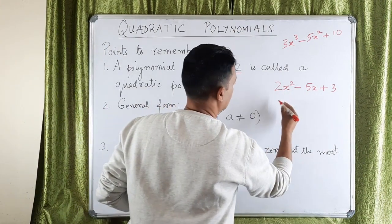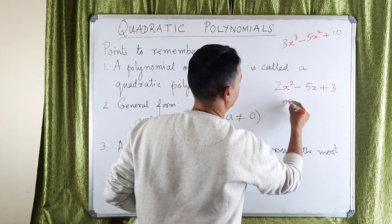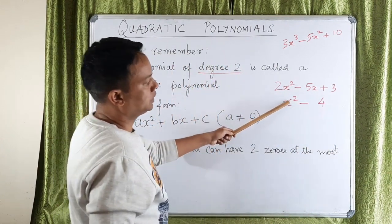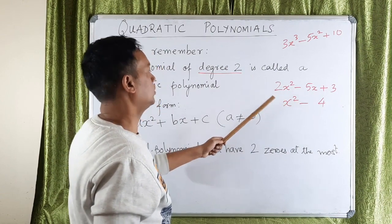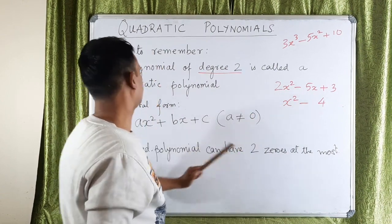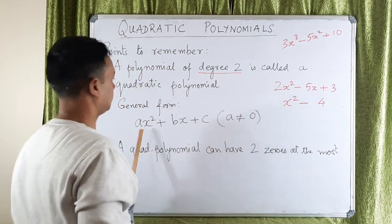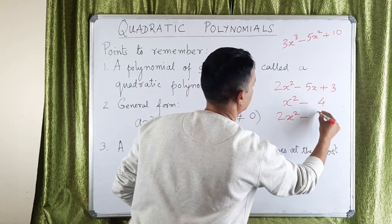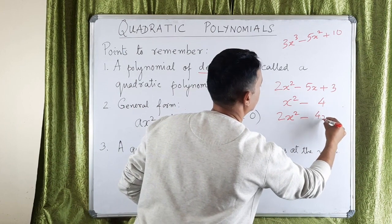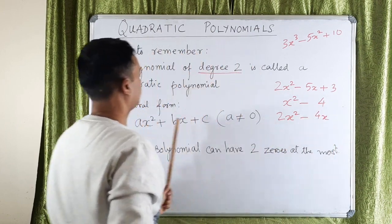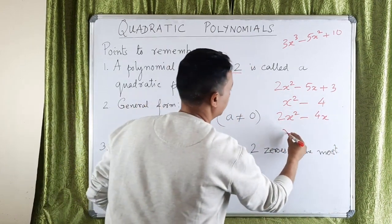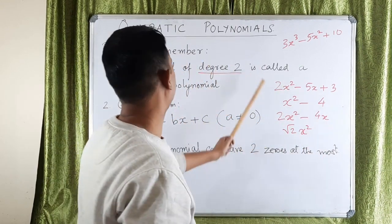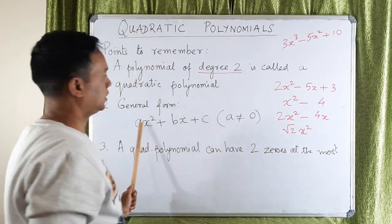Let's take another example. Say we have x squared minus 4. The degree is 2, highest power is 2, so it's a quadratic. We don't have an x term — doesn't matter. But we have to have the x squared term. Another example: 2x squared minus 4x. We don't have the constant term but it's still a quadratic polynomial.